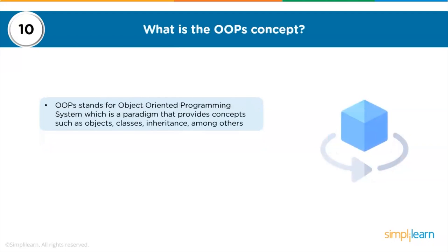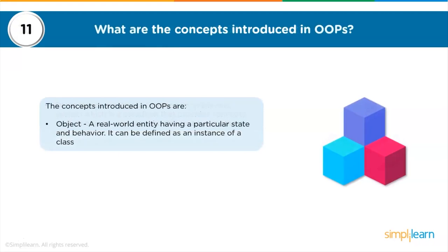What is the OOP concept? OOP stands for Object-Oriented Programming and System — a paradigm that provides concepts such as objects, classes, inheritance, polymorphism, encapsulation, etc. The concepts introduced in OOP are: object, class, inheritance, polymorphism, abstraction, and encapsulation. An object is a real-world entity having a particular state and behavior, defined as an instance of a class. A class is a logical entity that defines the blueprint from which an object can be created or instantiated.